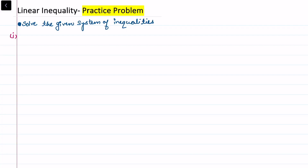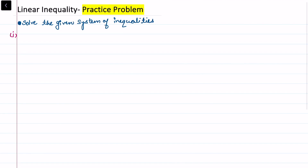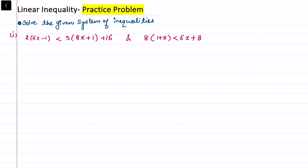In this video I want to solve certain linear inequalities. In the first problem I am taking 2 times (6x minus 1) is less than 3 times (8x plus 1) plus 16. This is one system given to us for the solution. Another system is also given, and we want to find the solution together for x.